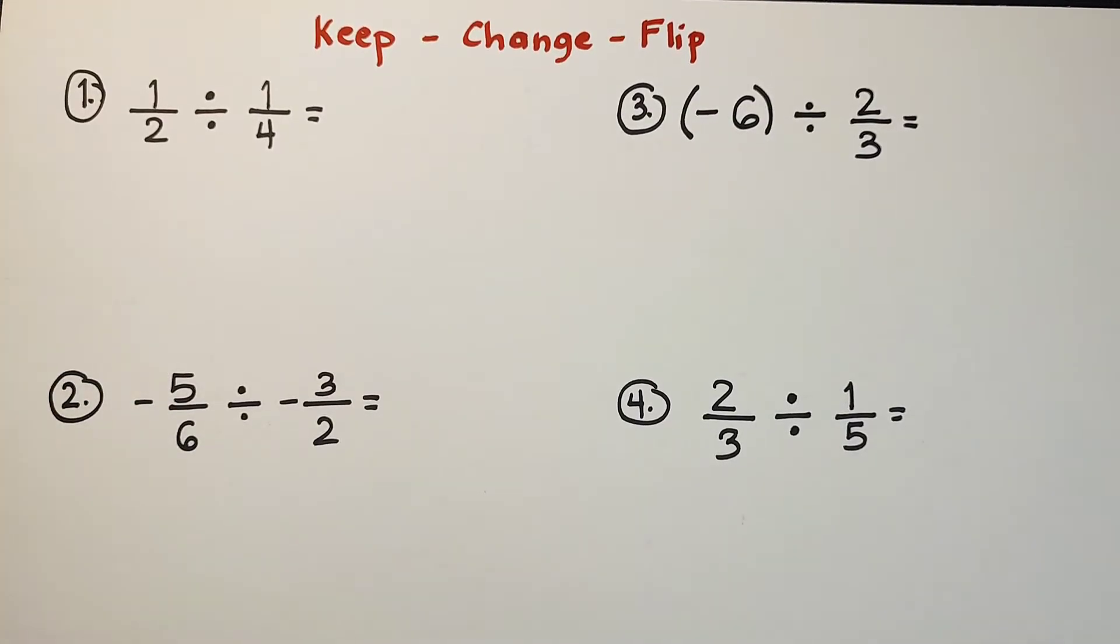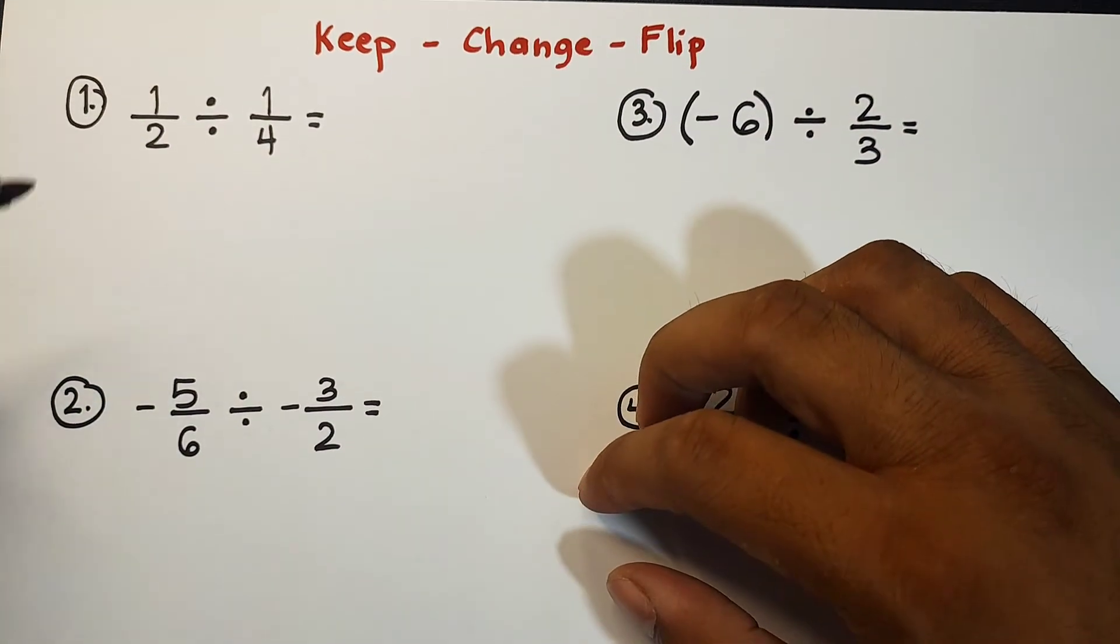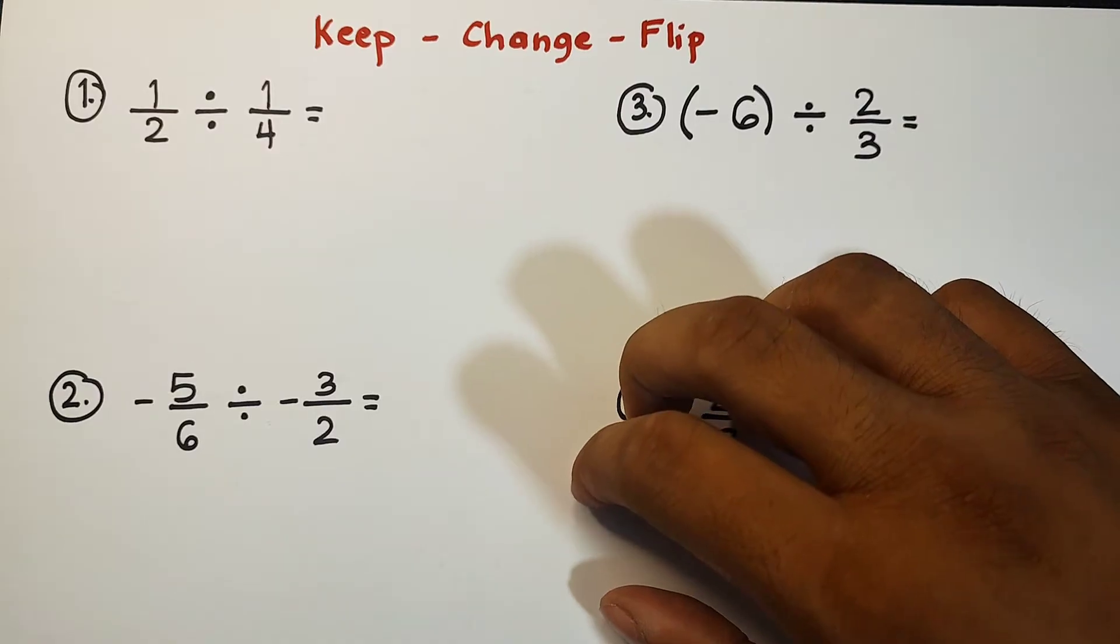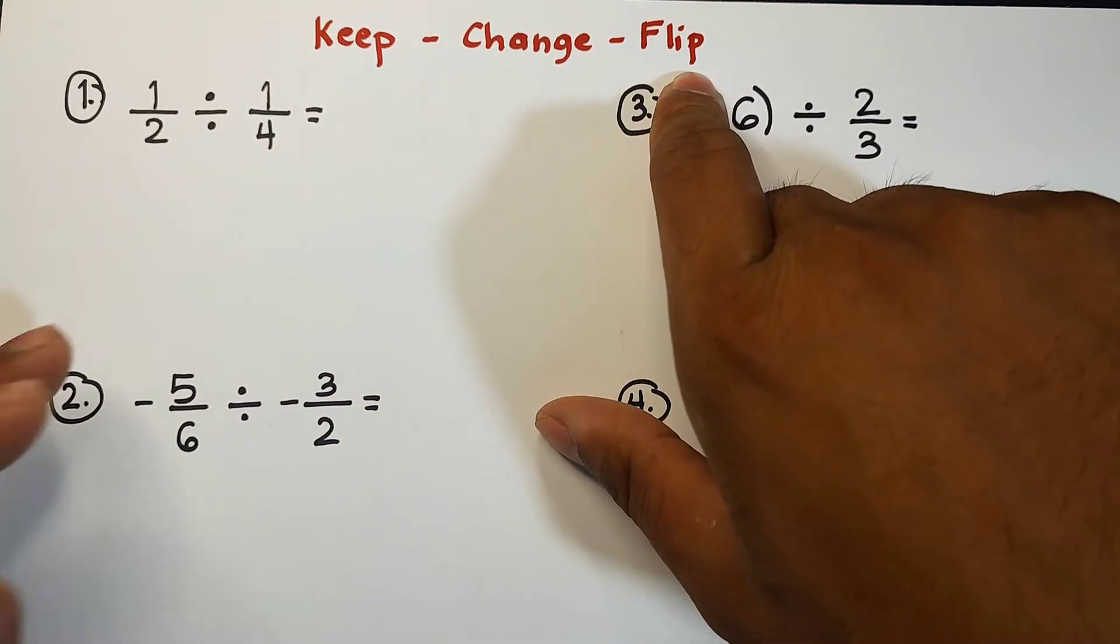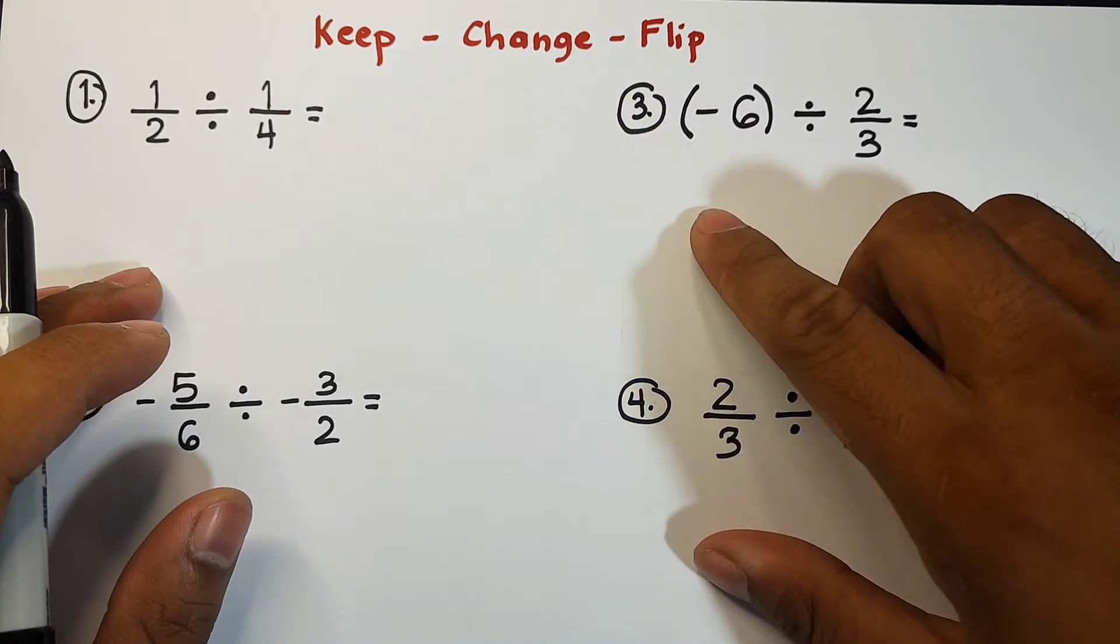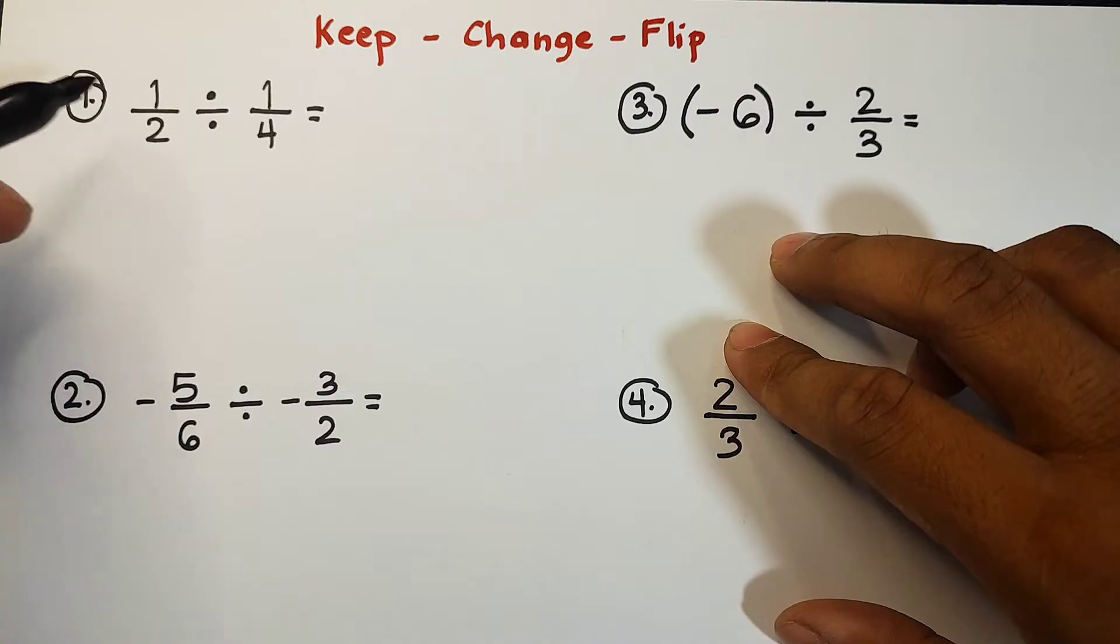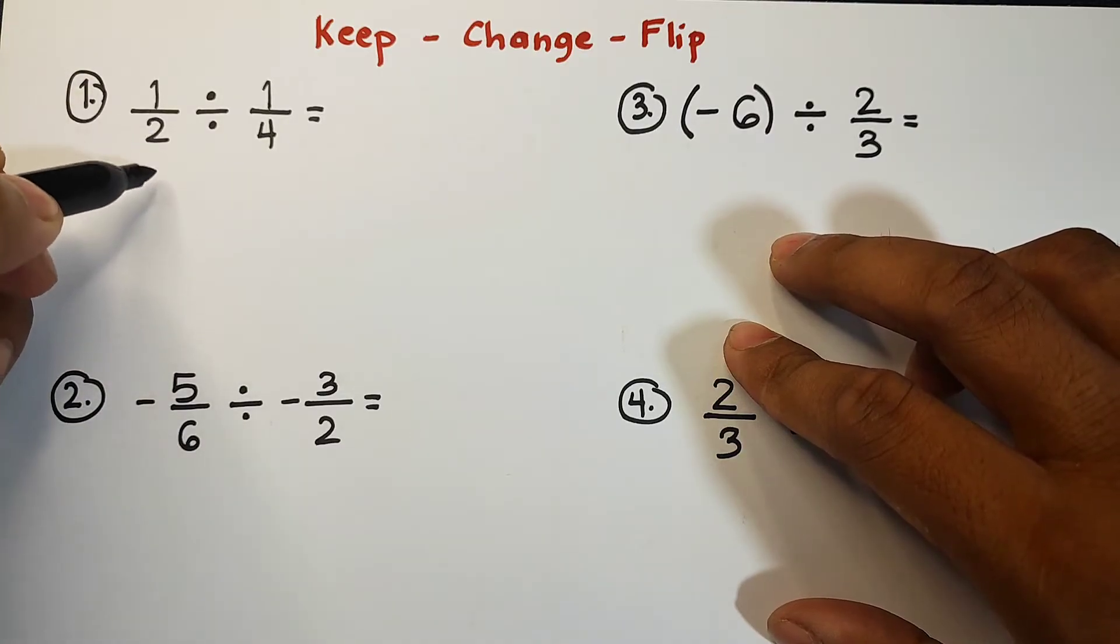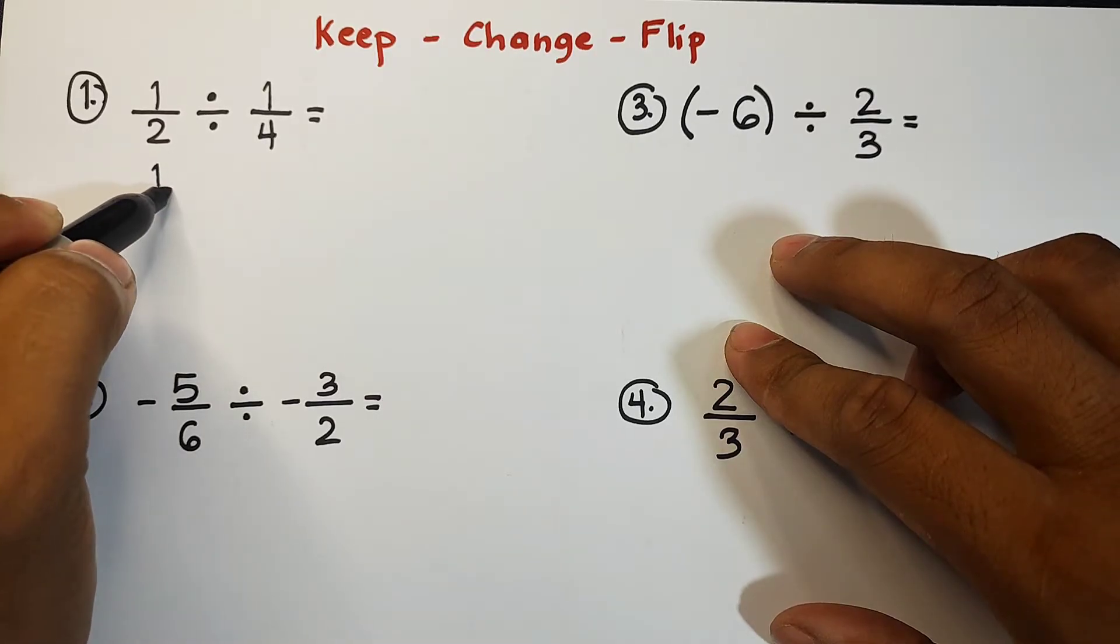So let's start with number one. In number one, we have one-half divided by one-fourth. So how are we going to apply the keep, change, and flip in dividing these rational numbers? First, we will keep, meaning we will simply copy or keep the first fraction or the first rational number, which is one-half. So we have one-half.